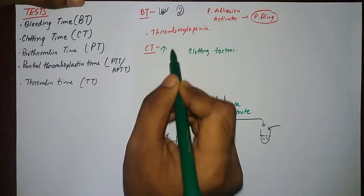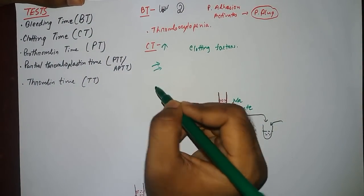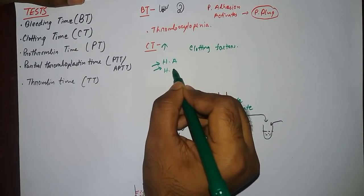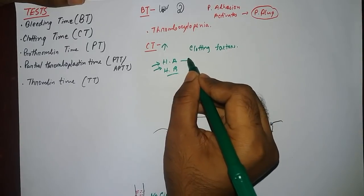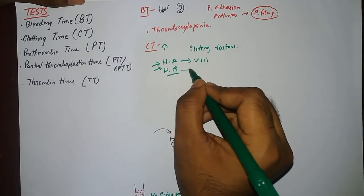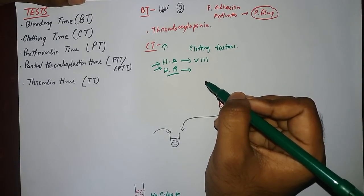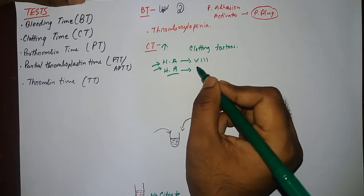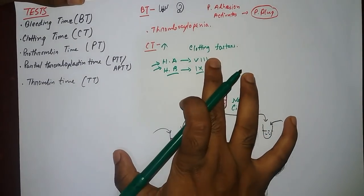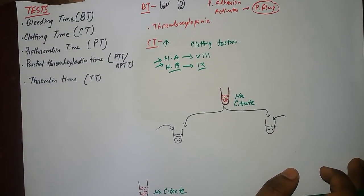If there is any deficiency in clot formation or any deficiency of clotting factors, the clotting time increases. Two very common conditions are hemophilia A and hemophilia B. In hemophilia A — also known as classic hemophilia — there is deficiency of factor 8. In hemophilia B — also known as Christmas hemophilia — there is deficiency of factor 9. Deficiency of factor 8 or factor 9 causes the clotting time to be increased.